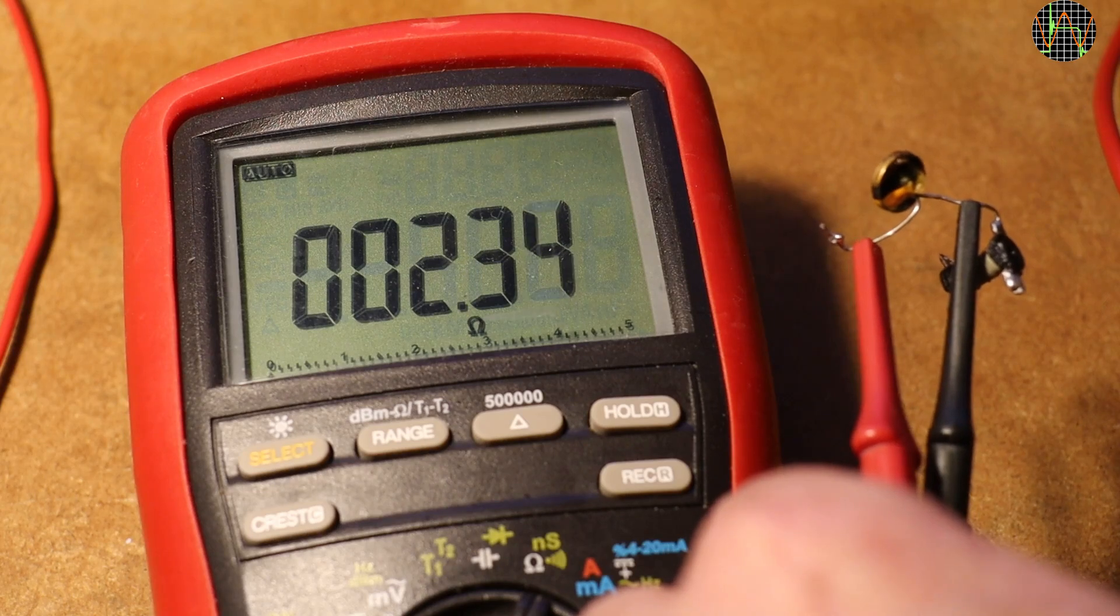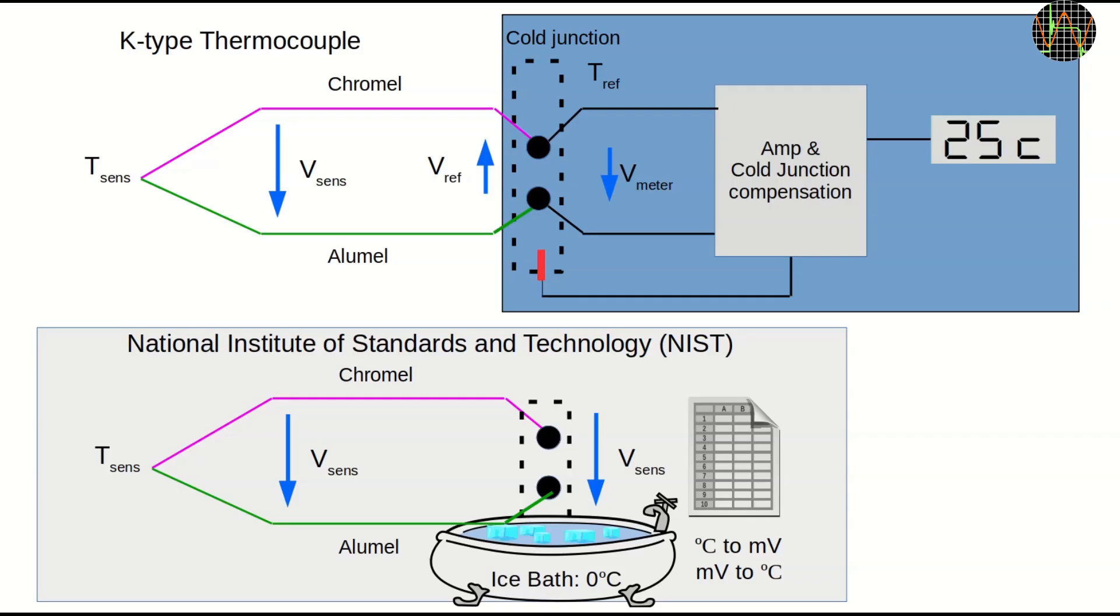So that is the cold junction compensation. I have covered thermocouples before, but let me briefly explain cold junctions using a K-type thermocouple. A J-type works just the same. The junction of two different metals produces a tiny voltage through what is called the Seebeck effect. The hotter the junction is, the more voltage. This is what a thermocouple is. A junction of two dissimilar metals.